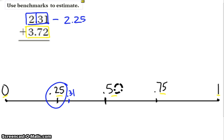The next thing that I'm going to do is look at my bottom number, where I get 3 and 72 hundredths. And I'm specifically going to look at the 72 hundredths and put that on my number line. Now, that would be right about here, and that is clearly closest to 75 hundredths.